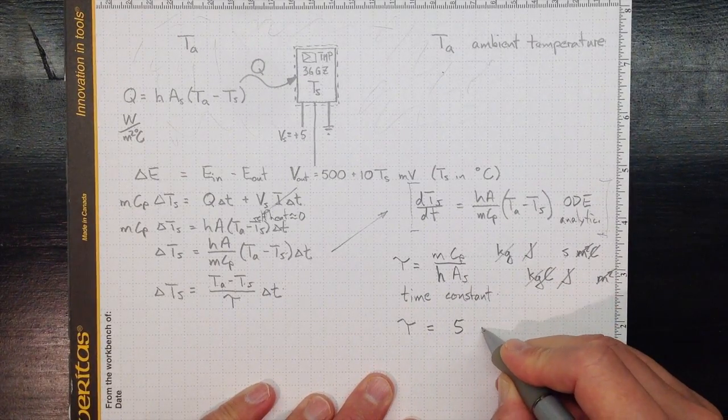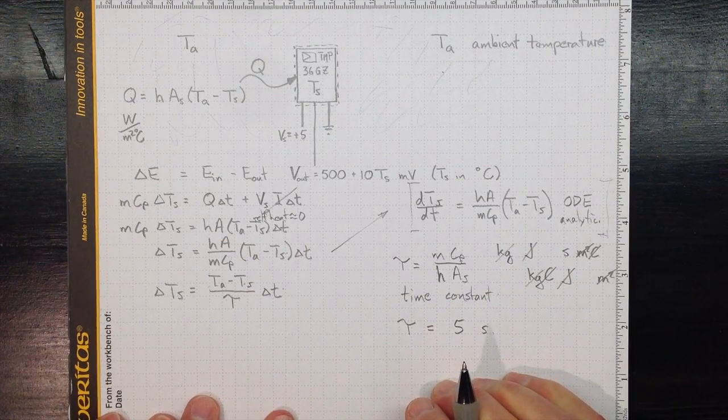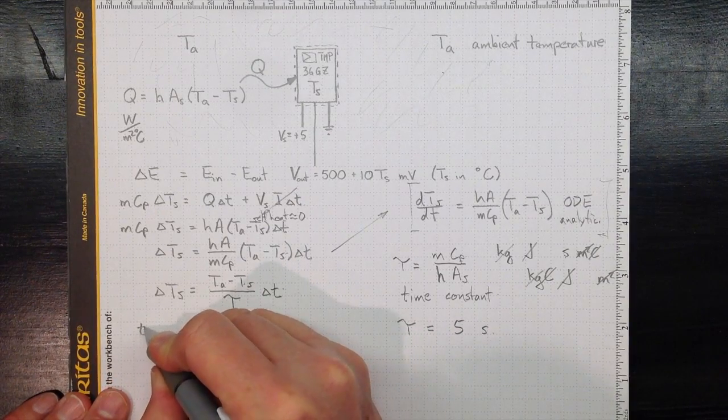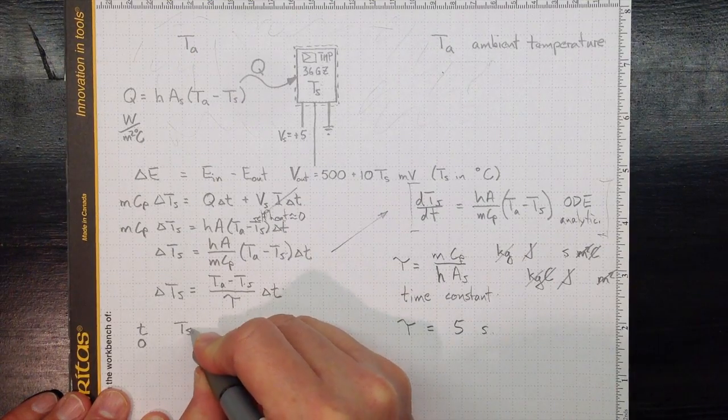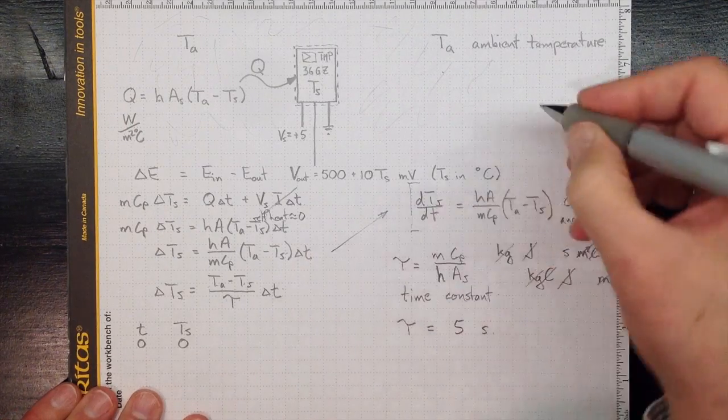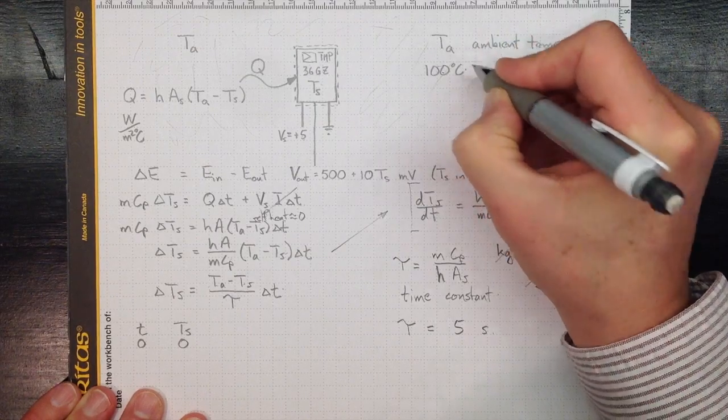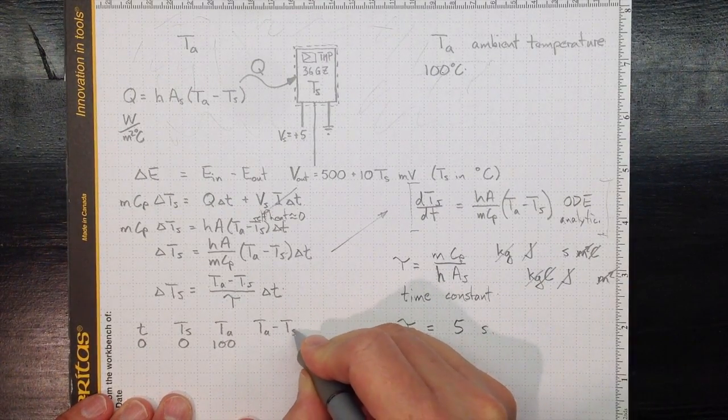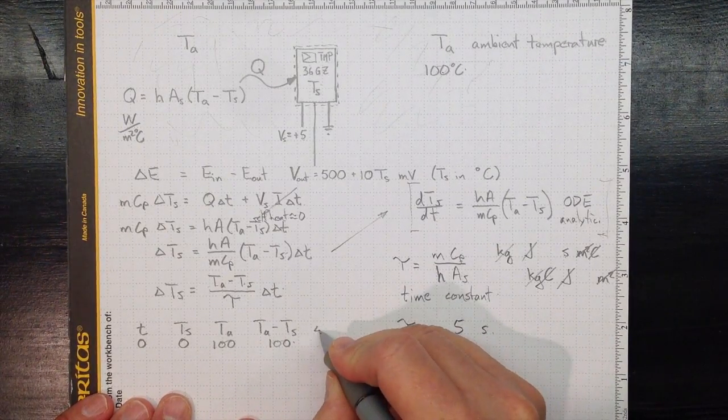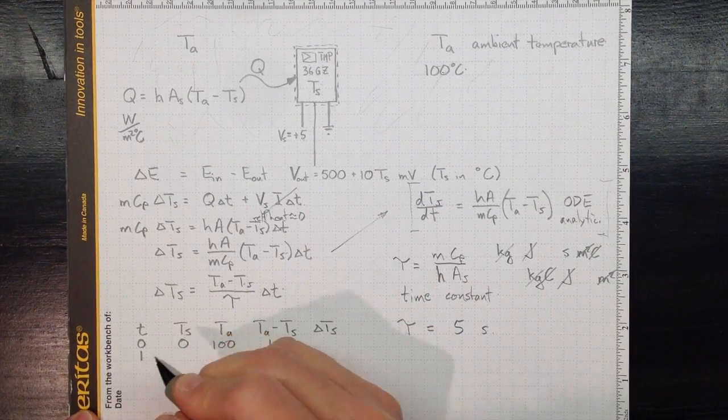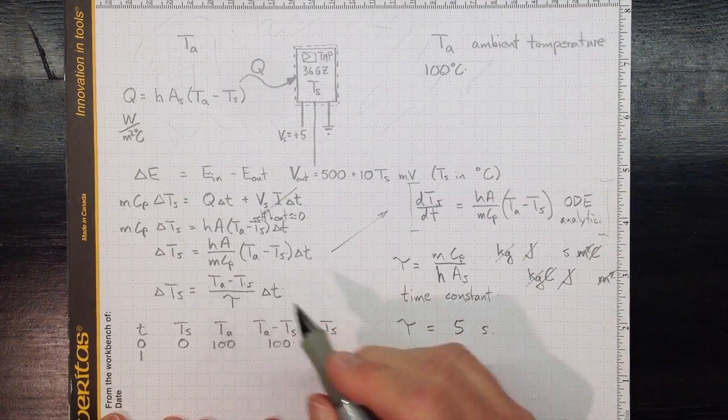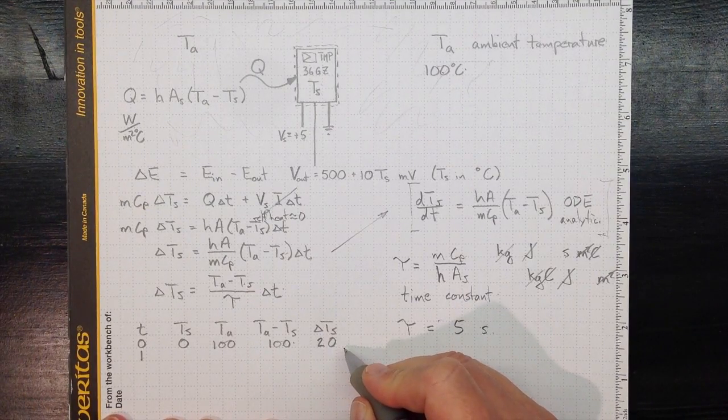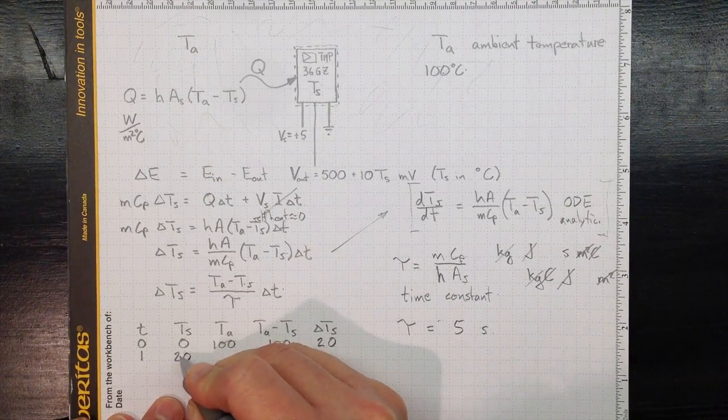So if tau was, pull a number out of a hat, five seconds, and that's a medium-quick or medium-slow response time constant, then we could figure out how quickly this temperature would change. If we looked at different times, so at time T equals zero, let's suppose the sensor was at zero degrees Celsius. And the ambient, let's suppose it was boiling water at 100 degrees Celsius. Then T ambient, minus T sensor, would be 100. And delta TS, for a one second delta T, so that's just one, delta TS would be 100 divided by tau, 100 divided by 5, is 20. So the sensor temperature would increase by 20 degrees C in the first second. So it goes from zero up to 20.